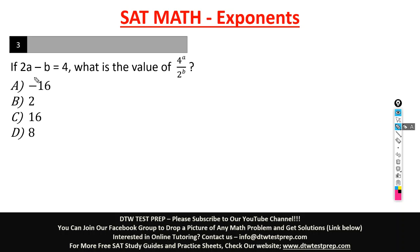Now look at this question. It says, if 2a minus b is equal to 4, what is the value of this? What is the value of 4 to the power of a over 2 to the power of b? So what do you do?